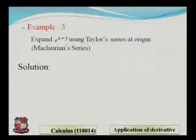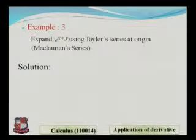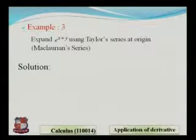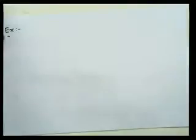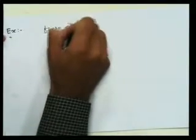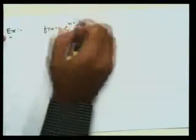This illustrates the use of the Taylor series to find approximate values of functions. Now the third example: we have to find the Taylor series at the origin of f(x,y) = e^(x+y). Taylor series at the origin is the Maclaurin series.